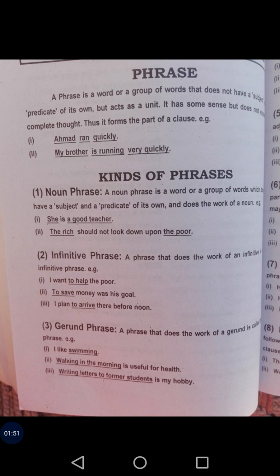Now let's look at the kinds of phrases. First is the noun phrase. A noun phrase is a word or group of words which does not have a subject and a predicate of its own and does the work of a noun. Simply, when a phrase works as a noun, it is called a noun phrase. For example: 'She is a good teacher' and 'The rich should not look down upon the poor.' Here, 'she,' 'good teacher,' 'the rich,' and 'the poor' are all noun phrases.